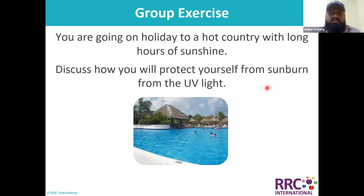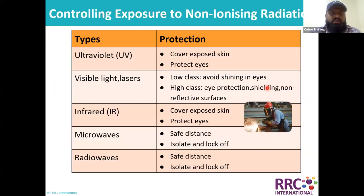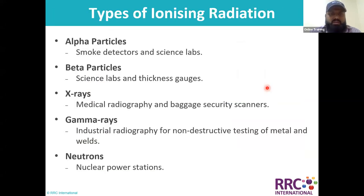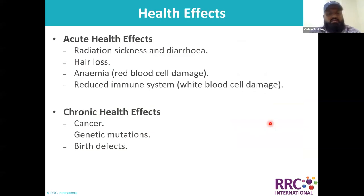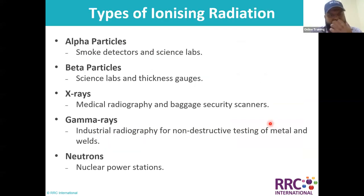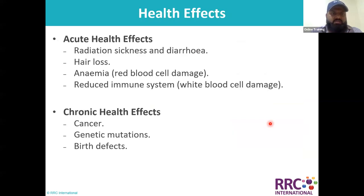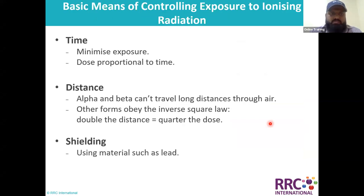Then we moved to the control of non-ionizing radiation and how to control it. Then we moved to types of ionizing radiation — different kinds and their health effects. We discussed acute health effects as well as chronic health effects, then the basic controls: time, distance, and shielding.